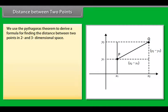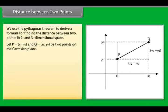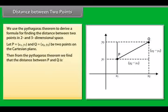Distance between two points. We use the Pythagoras theorem to derive a formula for finding the distance between two points in two- and three-dimensional space. Let P is equal to x1, y1 and Q is equal to x2, y2 be two points on the Cartesian plane as shown in the figure. Then from the Pythagoras theorem, we find that the distance between P and Q is